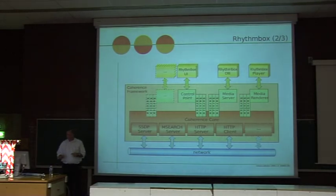These 1,200 lines are 400 here, 400 here, 200 here, and the rest is a little bit of initialization code to get the whole thing up. So it's really pretty easy to add UPnP functionality to your application.